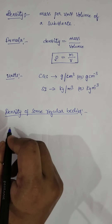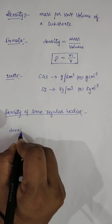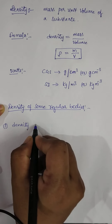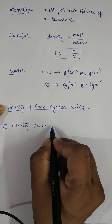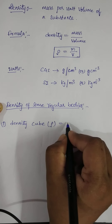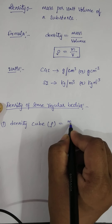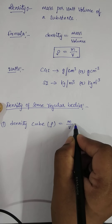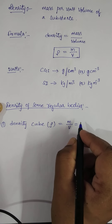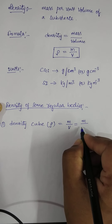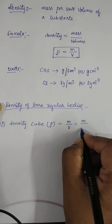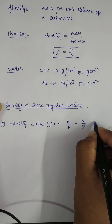Now, how to find the density of regular bodies. For example, the density of a cube is equal to mass per unit volume. The mass of the cube can be found by using the physical balance, and the volume by the formula: volume of a cube equals l cubed.